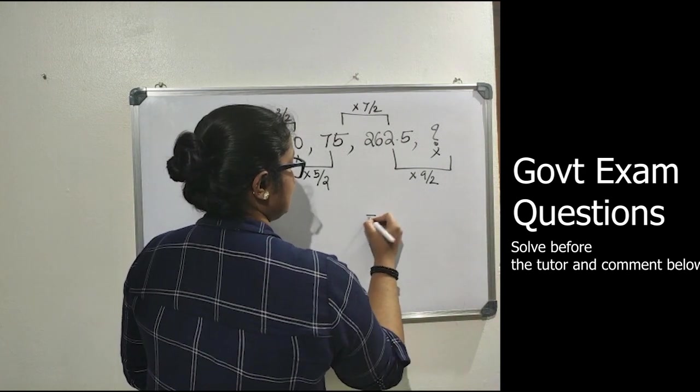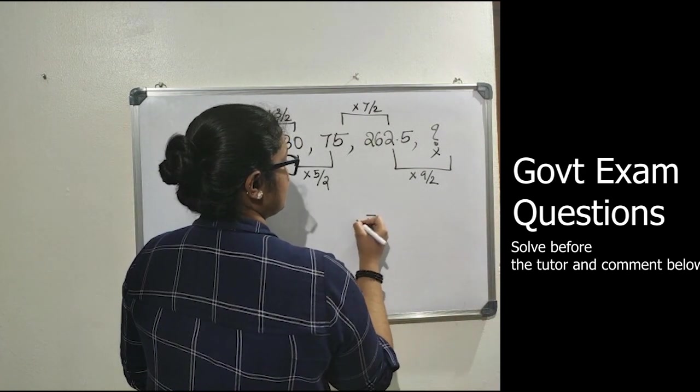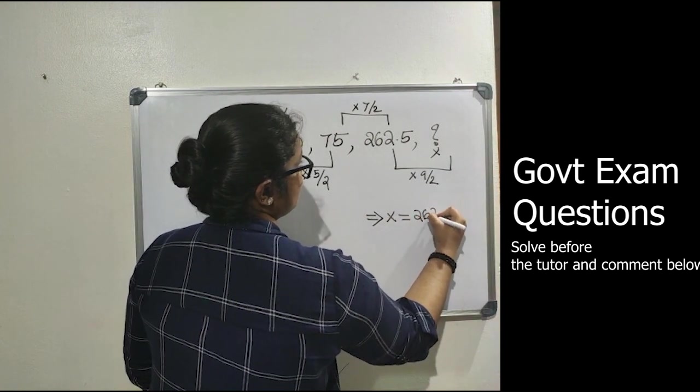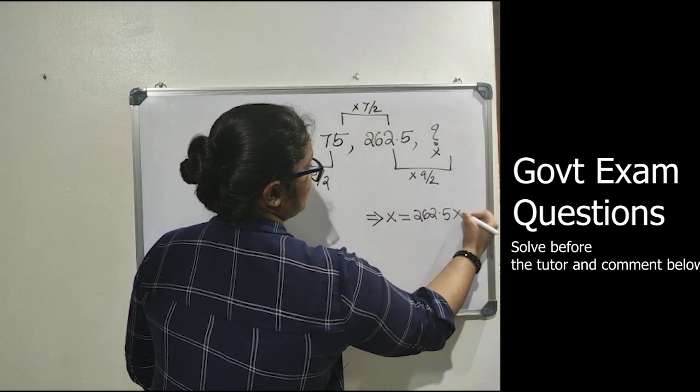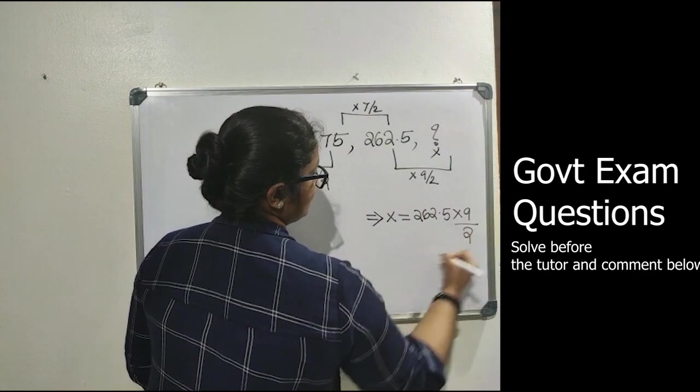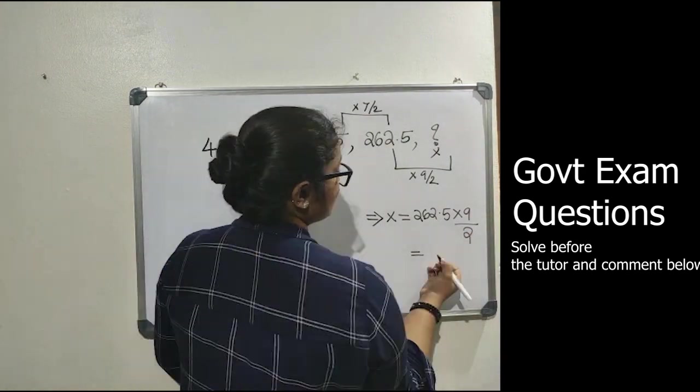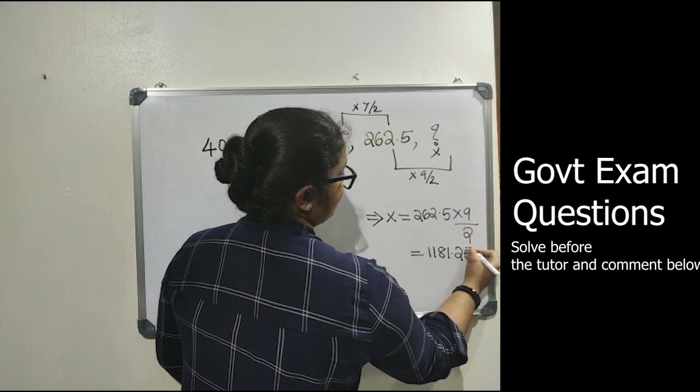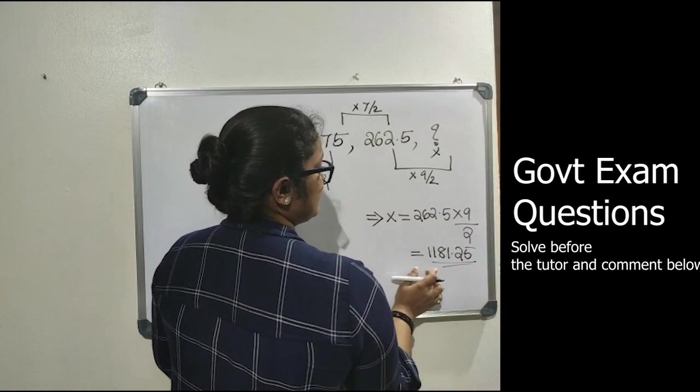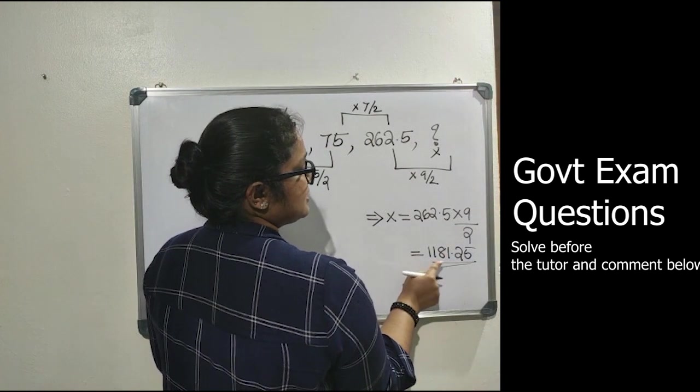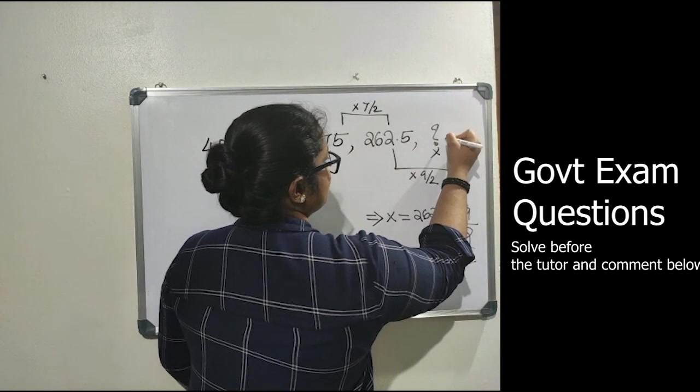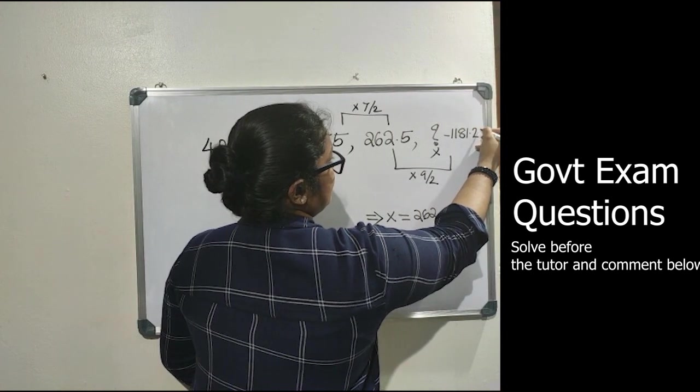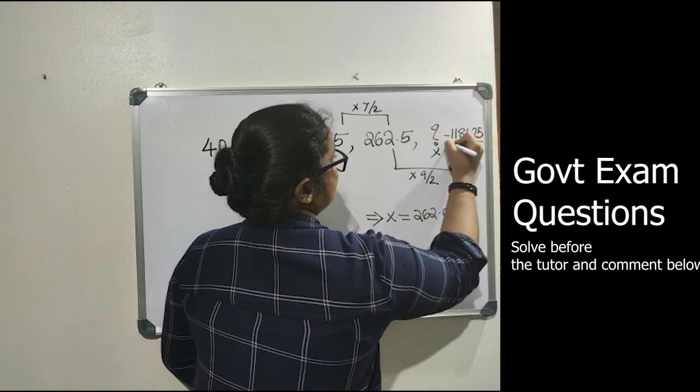That implies x equals 262.5 into 9 by 2, which equals 1181.25. Once solving this, we get the value of x as 1181.25.